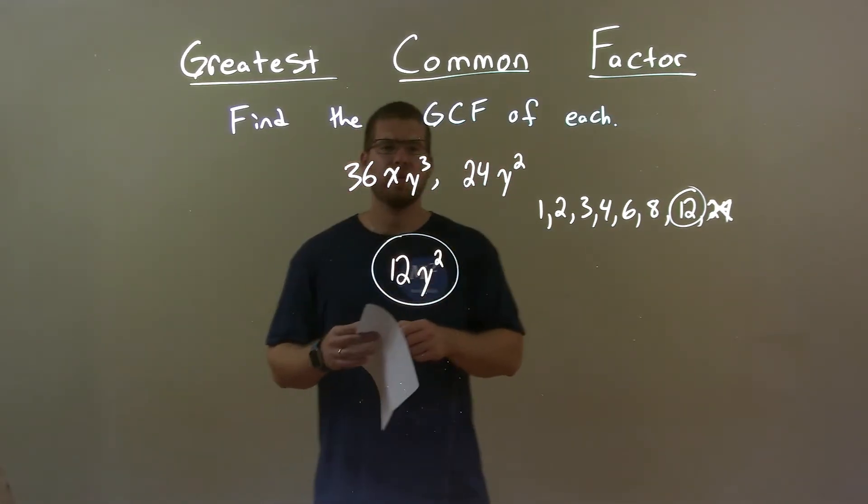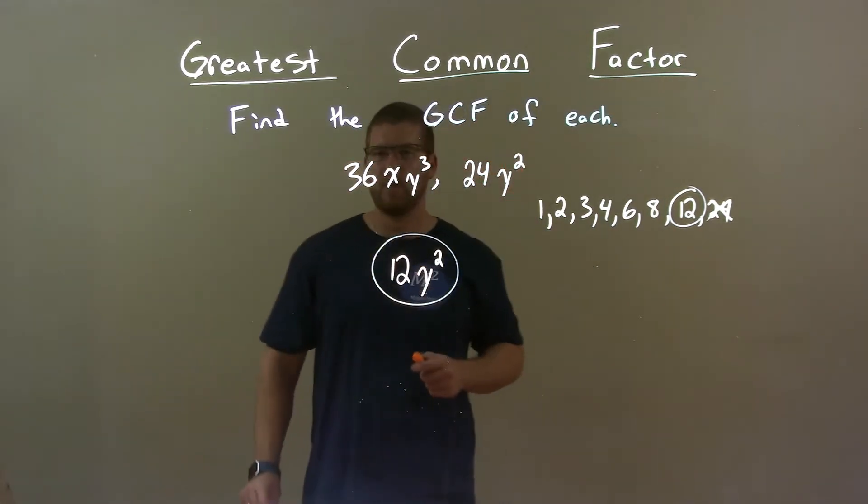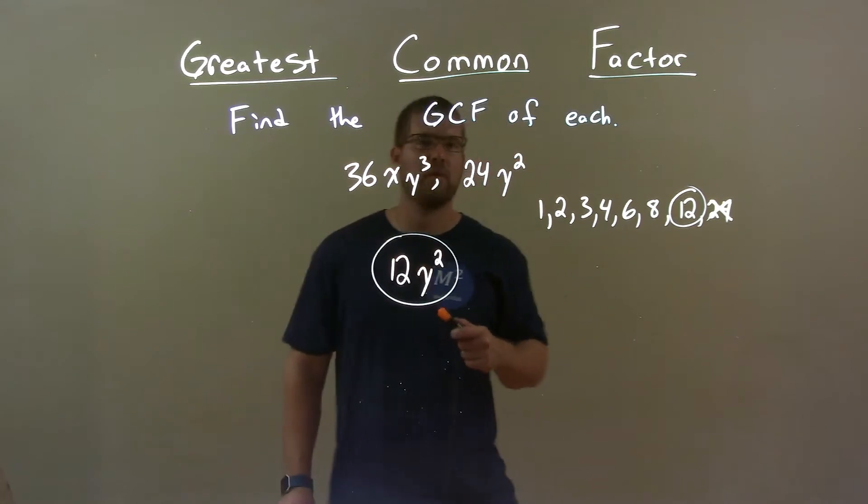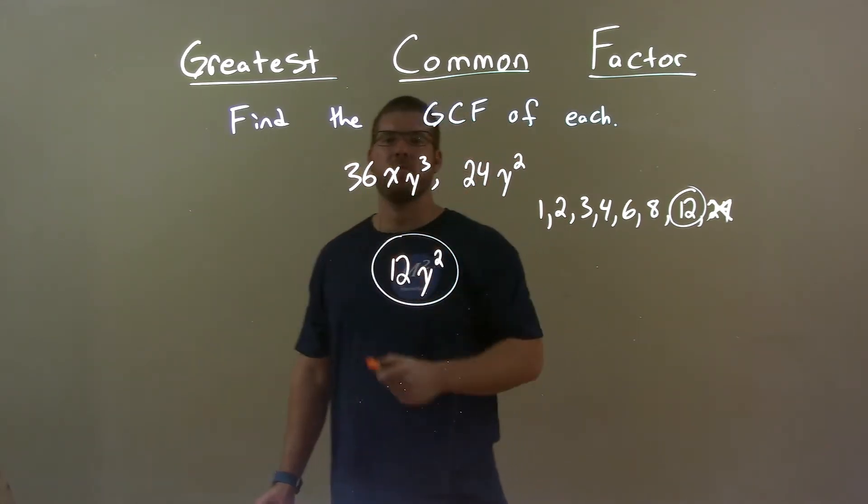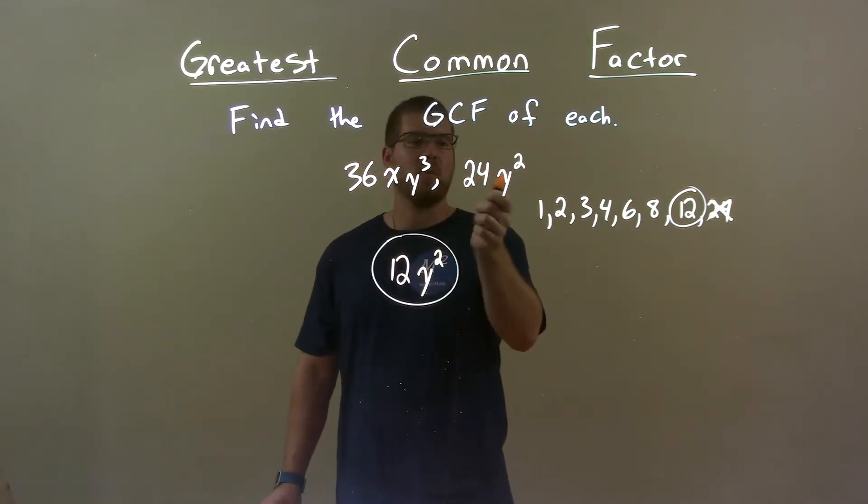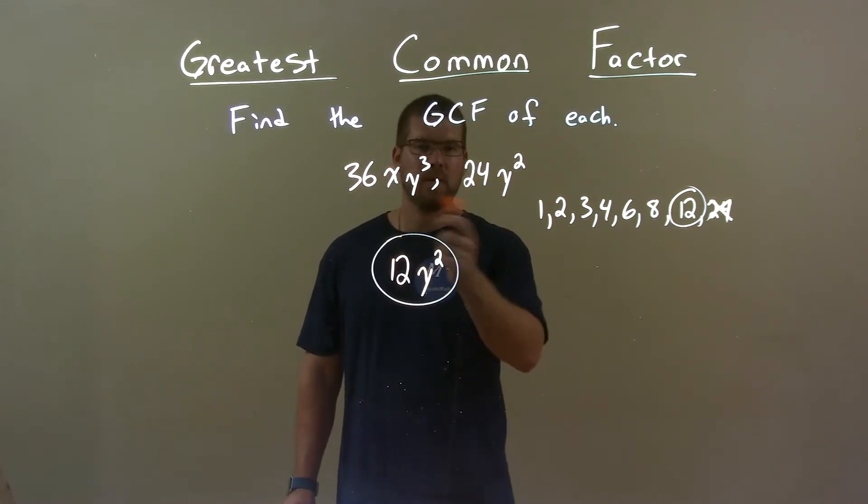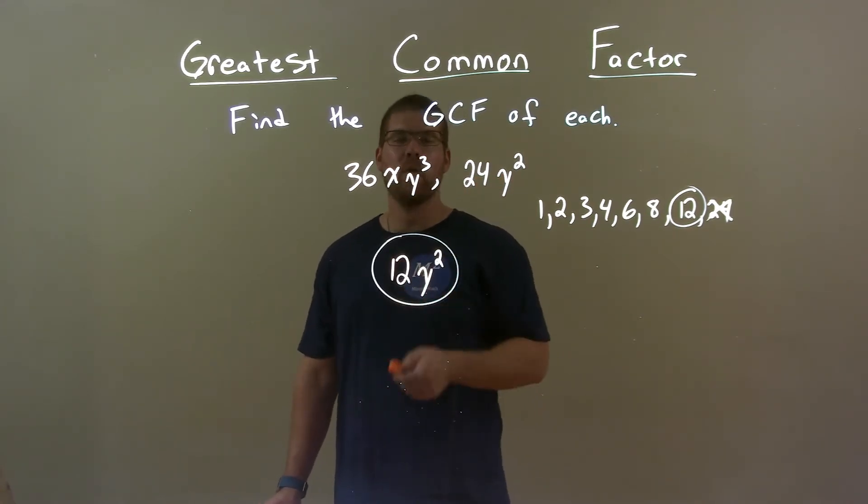Quick recap. We're given 36xy to the third power and 24y squared, and we find the GCF of it. Well, out of the numbers, we found 12 being the GCF for just the numbers. The variables was y squared. So our final answer, combining the two: 12y squared.